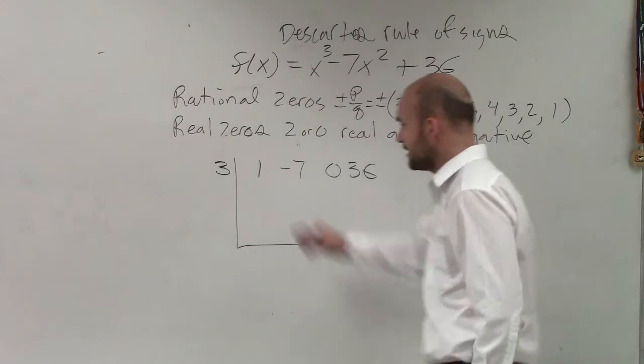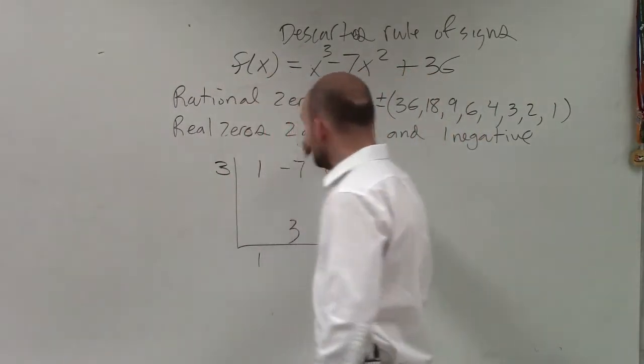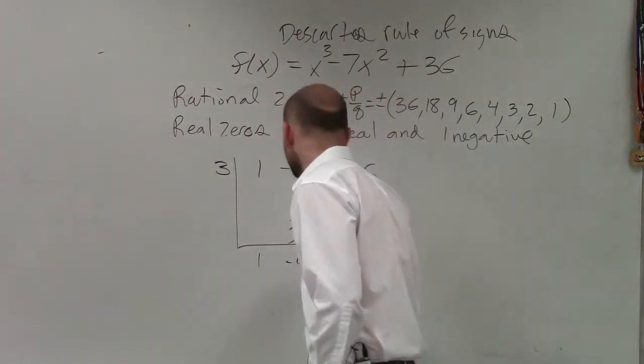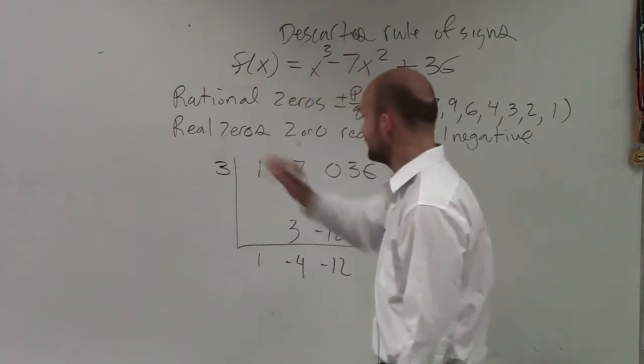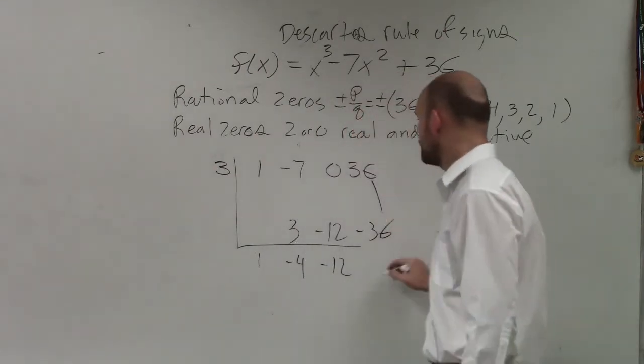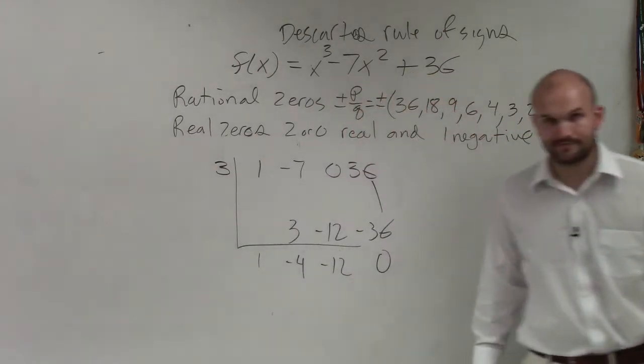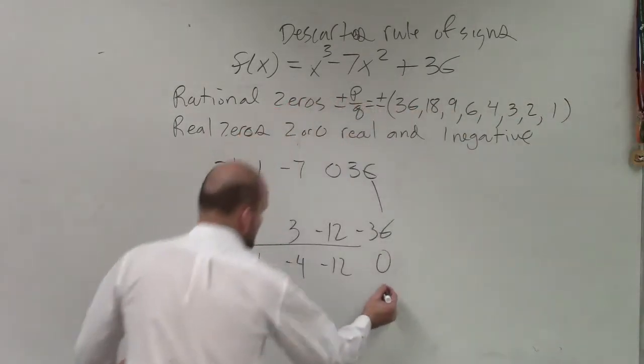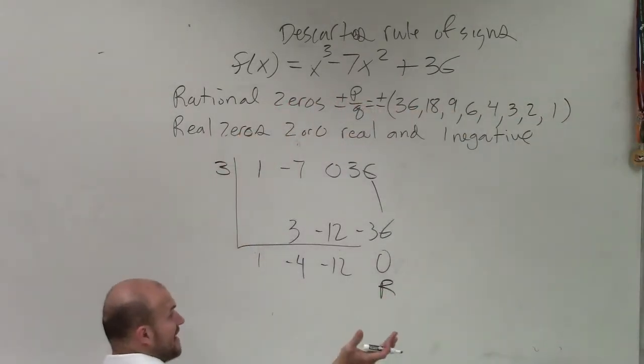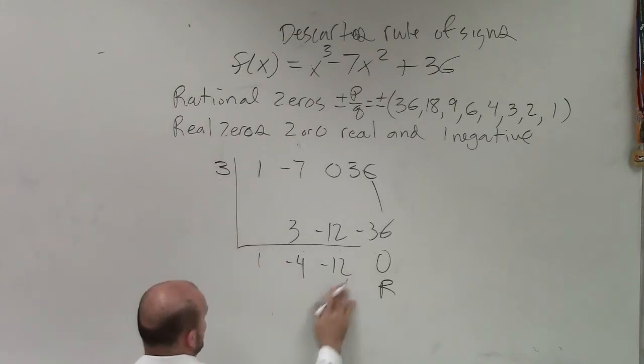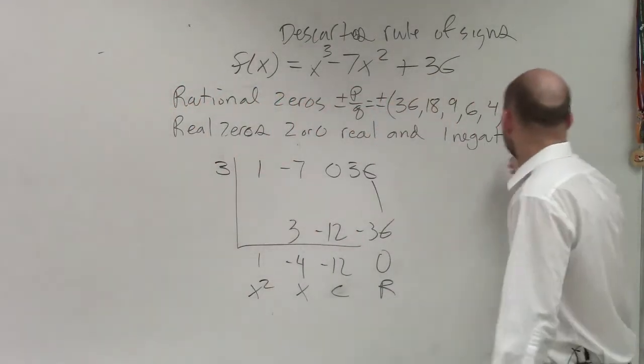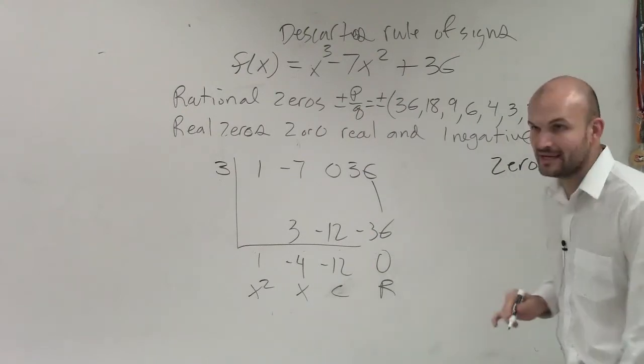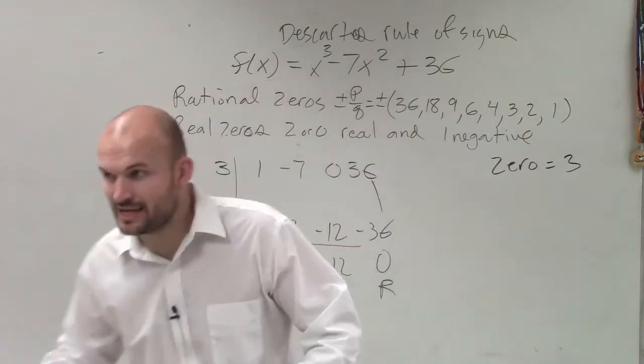So if I do 3, I bring down the 1. 1 times 3 is 3. Negative 7 plus 3 is negative 4. Negative 4 times 3 is negative 12. 0 plus negative 12 is negative 12. Negative 12 times 3 is negative 36. Negative 36 plus negative 36 is 0. So therefore, now I have a remainder which is 0. So therefore, it's a factor. Or that's a zero. Constant, linear, quadratic. So therefore, that is a zero. Zero equals 3.